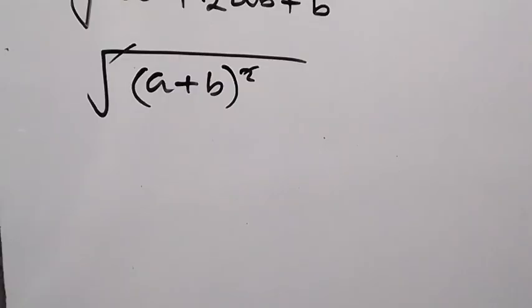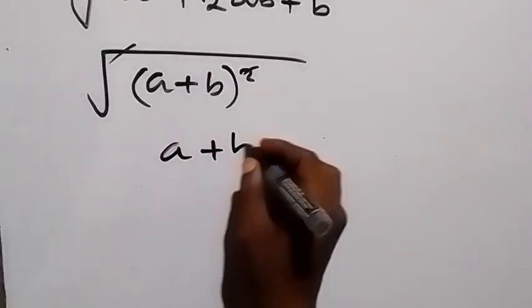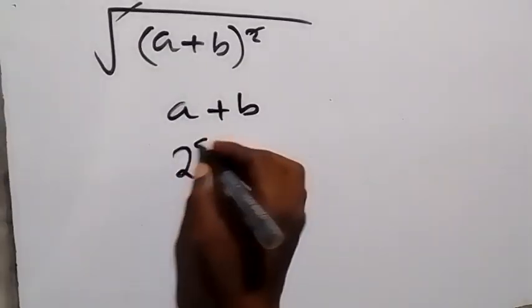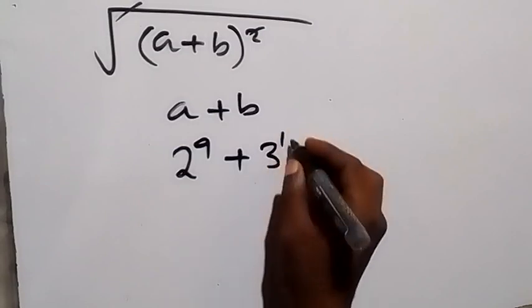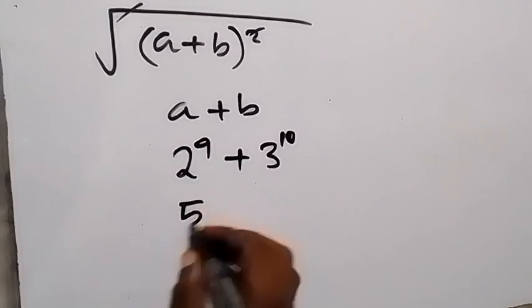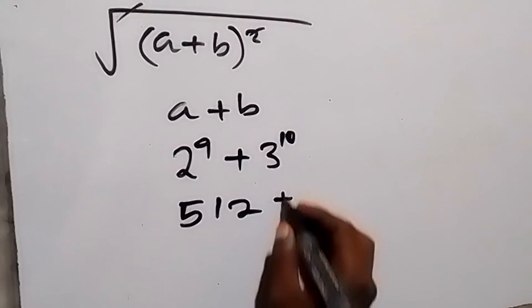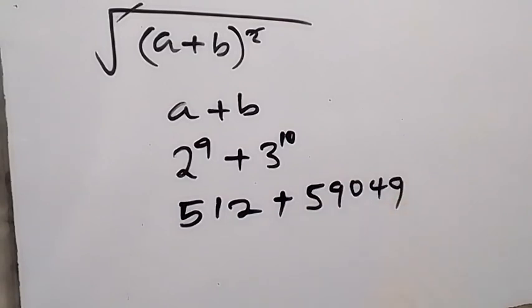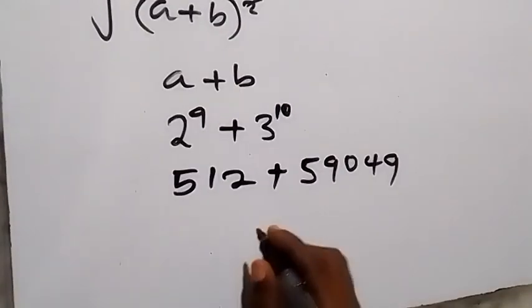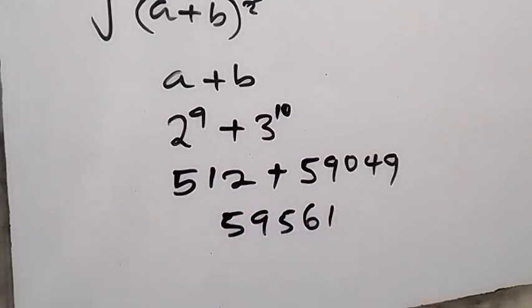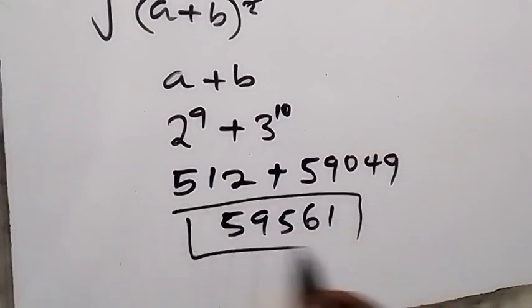The square root cancels the square, so we get simply a plus b. The value of a is 2 raised to power 9 and b is 3 raised to power 10, so this is just 2 raised to power 9 plus 3 raised to power 10. Simplifying: 2 raised to power 9 is 512, and 3 raised to power 10 is 59049. Adding these together gives us 59561, and that is the solution to the problem.